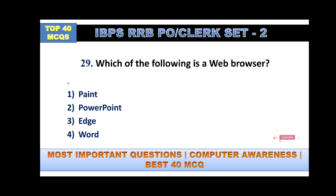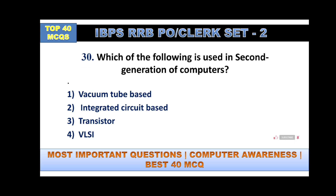Which of the following is a web browser? Except option number three, PowerPoint and Word are application software. Microsoft Edge is a web browser — answer is option number three. Which of the following is used in the second generation of computers? In second generation, transistors are used. In first generation, vacuum tubes. In third generation, integrated circuits. In fourth generation, VLSI is used.